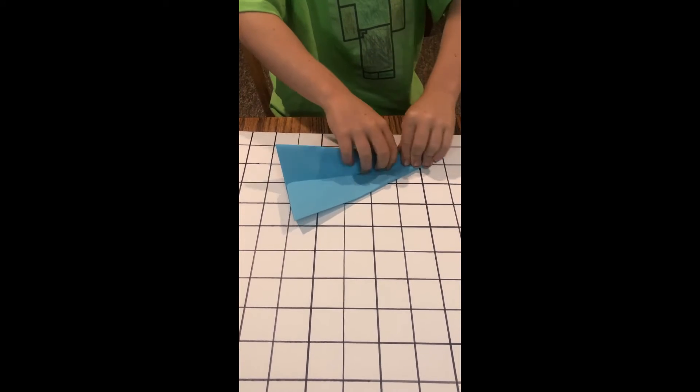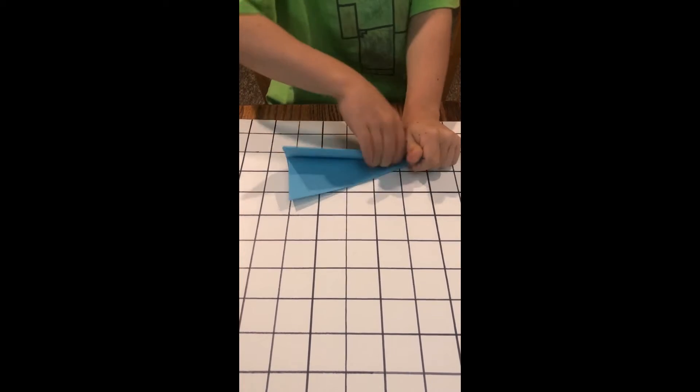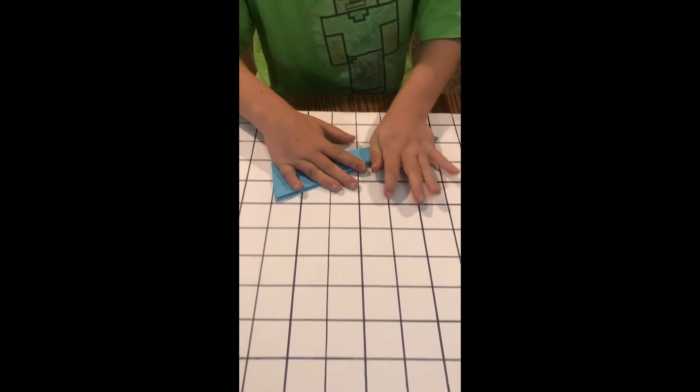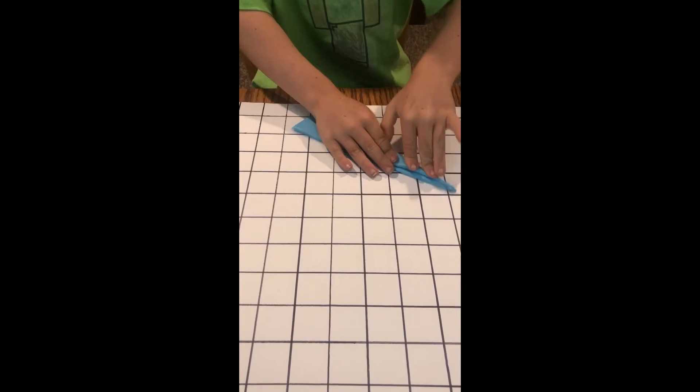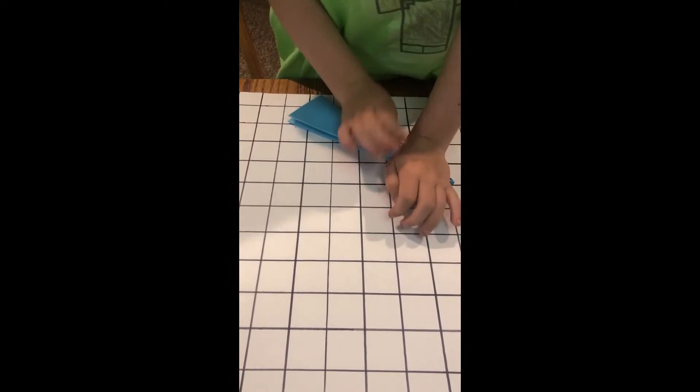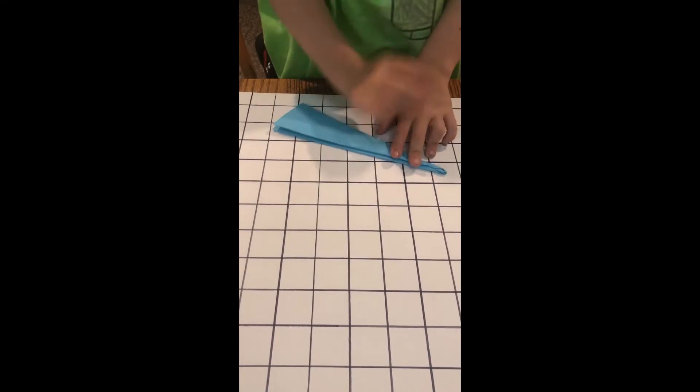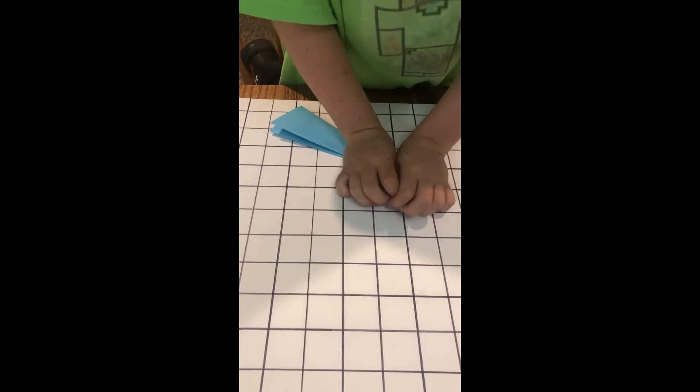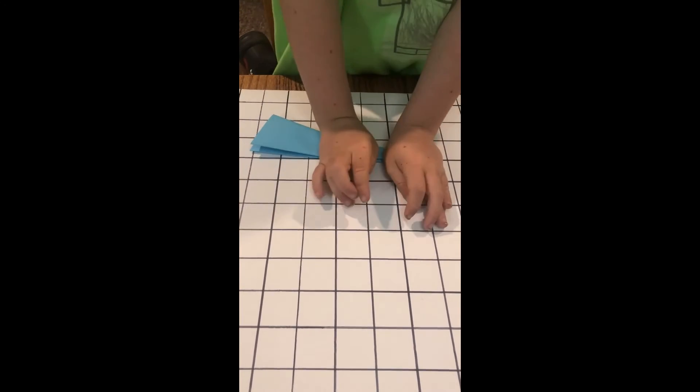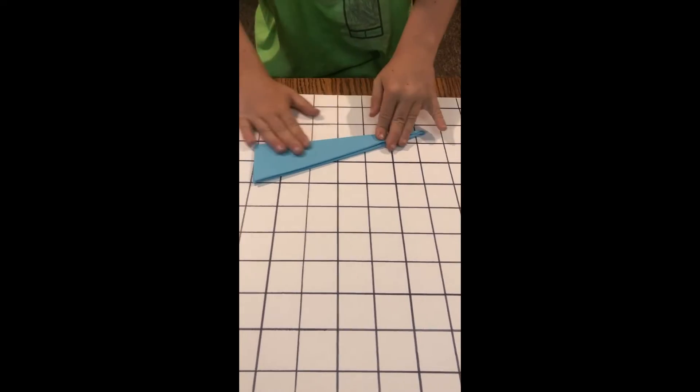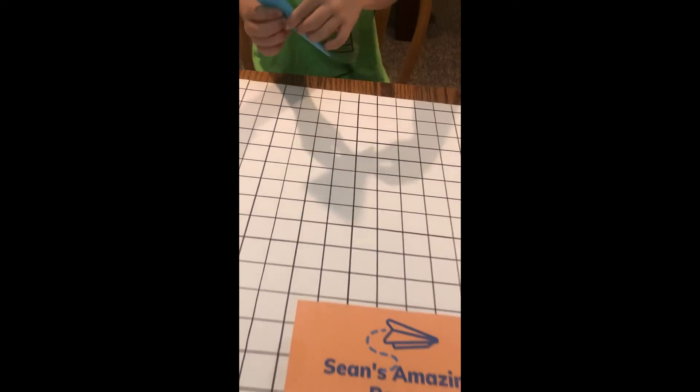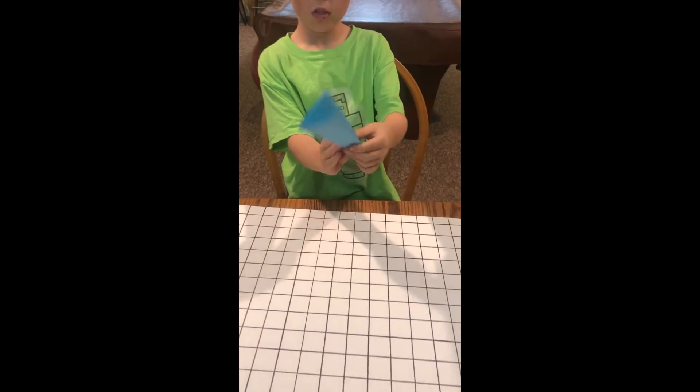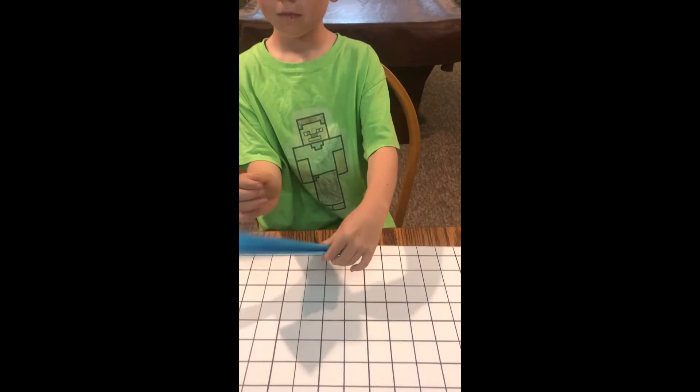Now you're done with that. Fold this in half. I know the front layers are very thick, so like hammer it down so it actually makes the crease here. The plane should look like this on both sides. No pockets, no anything.